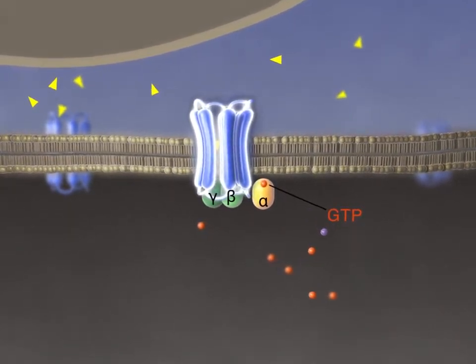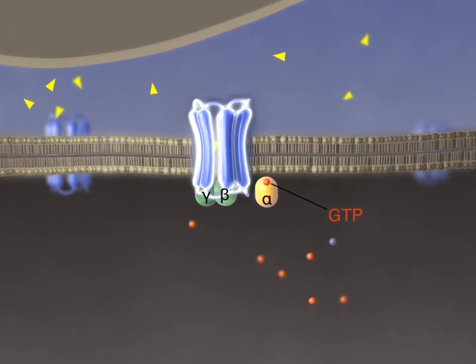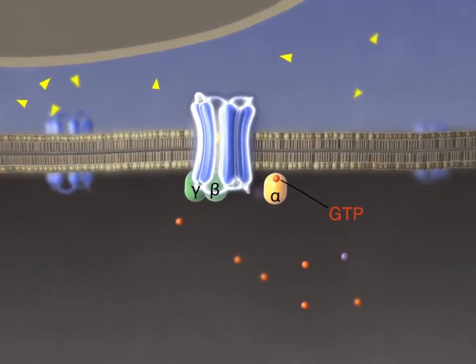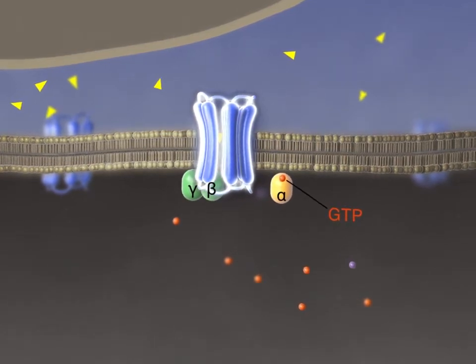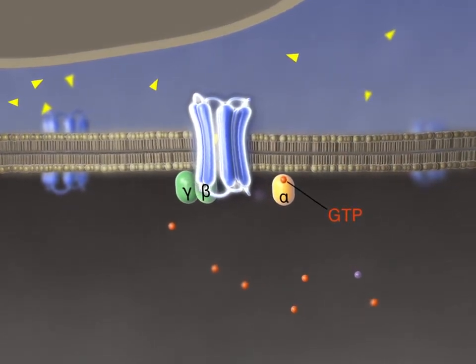This exchange of guanine nucleotides activates the G-protein alpha subunit, causing it to dissociate from the receptor and its beta-gamma subunits.